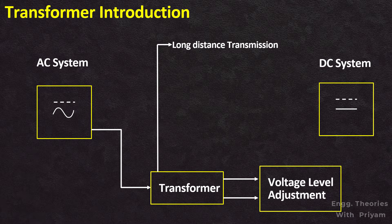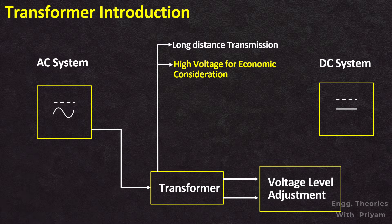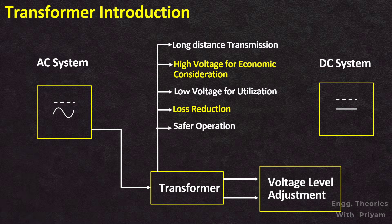Transformers have allowed long-distance transmission of electrical energy without considerable power loss. When it comes to transmission, high voltages are necessary due to economic considerations, but when it comes to the utilization of electricity, low voltages are necessary due to safety considerations. The utilization of the transformer is unavoidable in order to accomplish the conversion of the voltage to the voltage that is required.